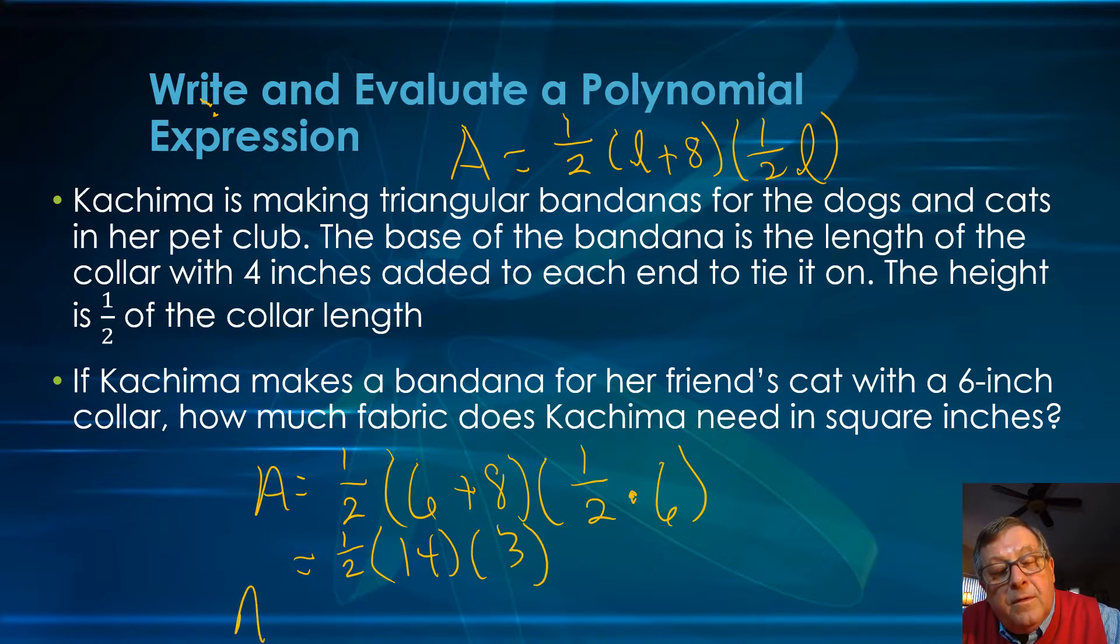So the area of fabric, the amount of fabric we need to make this cat's bandana, one half times 14 is 7, and 7 times 3 is 21. We're going to need 21 square inches for this cat collar.